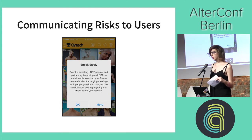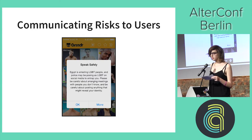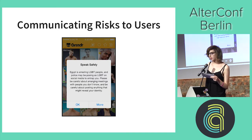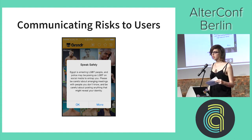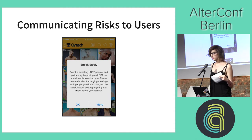Social engineering can also be an issue — this is when people manipulate other people into sharing information that maybe they shouldn't. Grindr had this problem. This is the message they sent to their users in Egypt: "Egypt is arresting LGBT people, and police may be posing as LGBT on social media to entrap you. Please be careful about arranging meetings with people you don't know, and be careful about posting anything that might reveal your identity." They saw a risk to their users and warned them. I think this is a really good idea. But if you are warning your users about risk, make sure that your warnings are accessible, particularly if people don't have as much technical knowledge — don't just assume that knowledge, you need to make your warnings accessible.